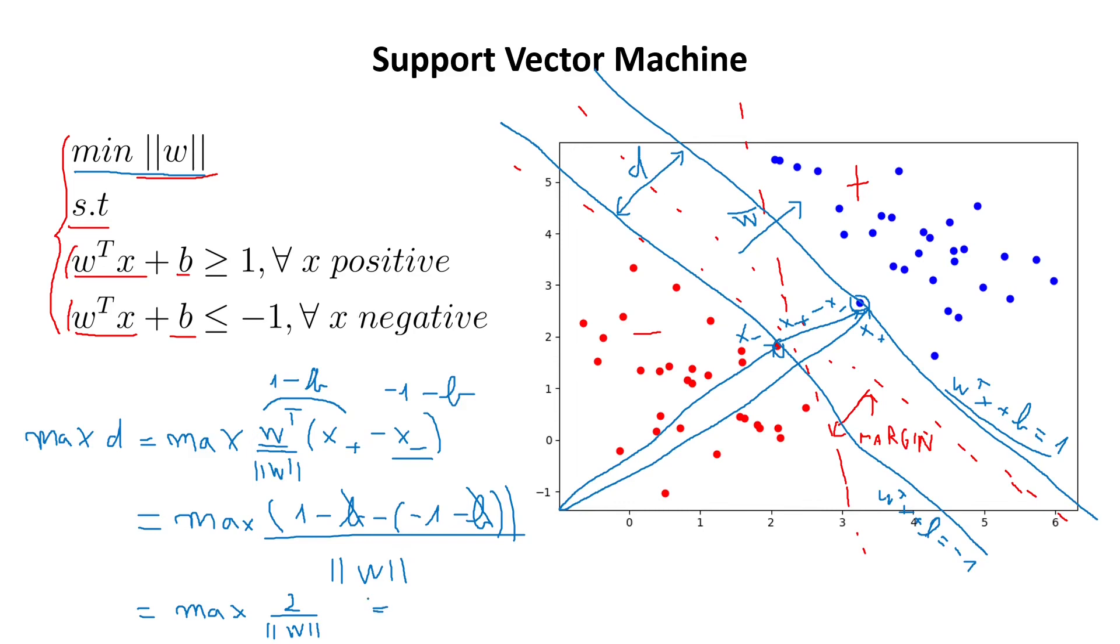And this is equivalent to minimizing the norm of w. These two here doesn't matter in minimization or maximization problem that much. So we can ignore it. Okay. So basically, we obtained that when we are trying to maximize our margin d here, this operation is equivalent to minimizing the norm of our parameters of the support vector machine. Which, again, is exactly what we are trying to do in our definition. So we can say that this one is equivalent to maximizing our margin.